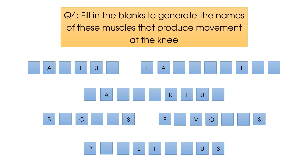The first muscle is the vastus lateralis. The second muscle is sartorius. The third muscle is biceps femoris. And the fourth muscle is popliteus.